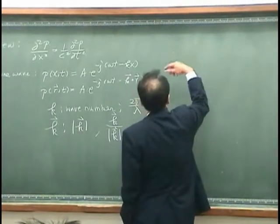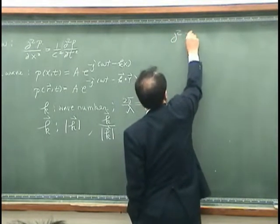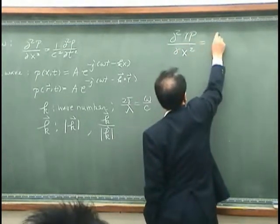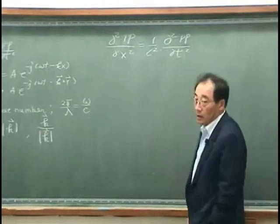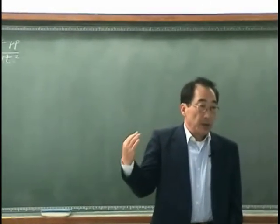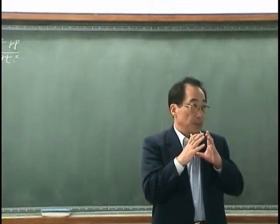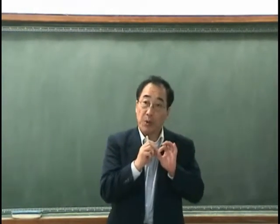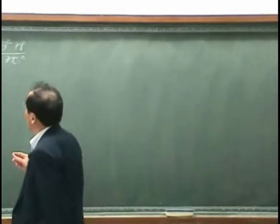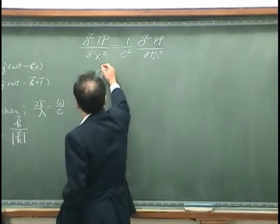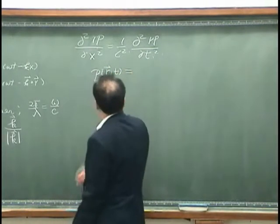Another possible solution would be waves that satisfy the following differential equation. In other words, the waves radiate directly from a point source — we could say these are spherical waves. This wave can be expressed as shown here.